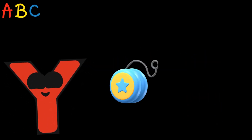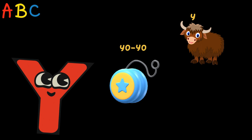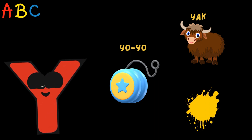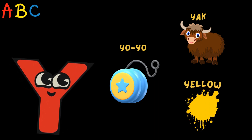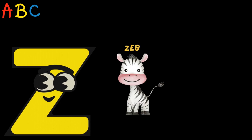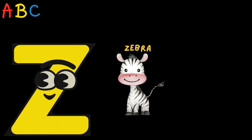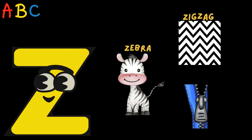Y is for Yoyo, Yak, Yellow. Z is for Zebra, Zigzag, Zipper.